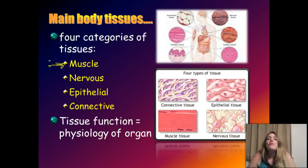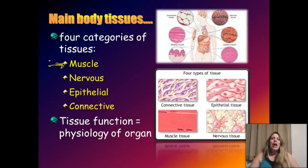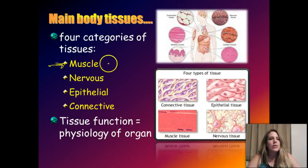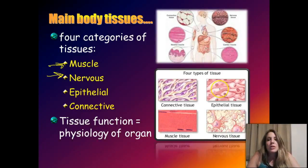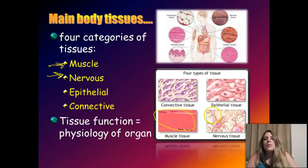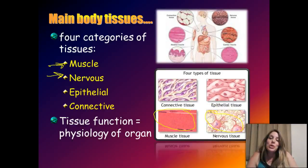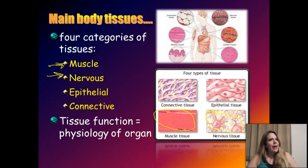We also have cardiac muscle, which makes up your heart. We'll talk more about these different kinds of muscle tissues, and later in the semester we'll go deep into muscle at the cellular level. Next, we have nervous tissue — obviously associated with the nervous system — found in your brain and running throughout your body containing your nerve cells.